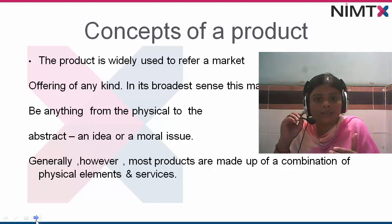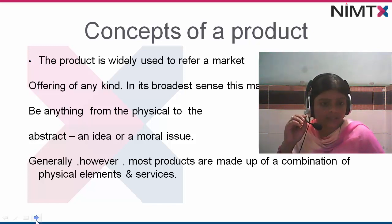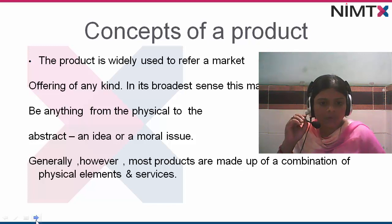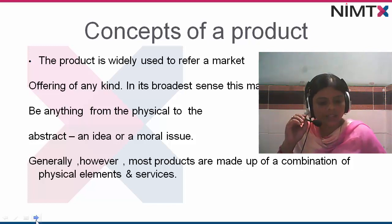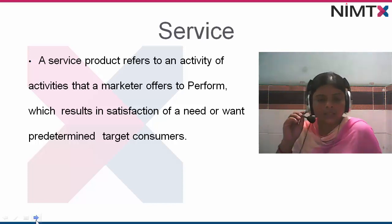The product, as stated in earlier chapters, is a combination of ingredients and also includes services. The product is widely used to refer to a market offering of any kind. In a broad sense, this may be anything from the physical to the abstract — an idea or a moral issue. Generally, however, most products are made up of a combination of physical elements and services.